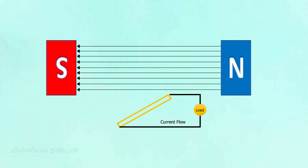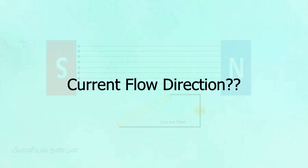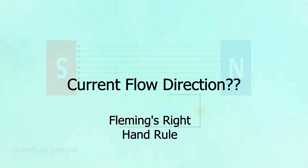If you want to change the generator, you can change it the other way. We can simplify our understanding of this. What direction is the wire moving in? That is the right-hand rule. That's why we call it the generator rule.